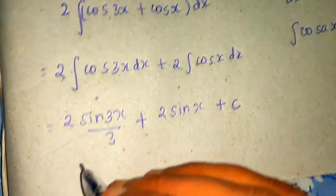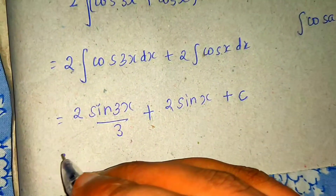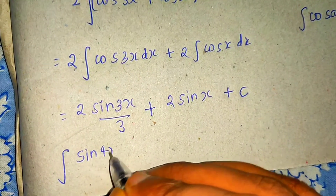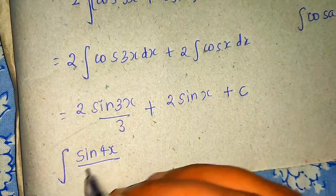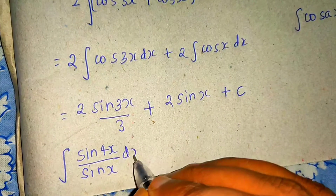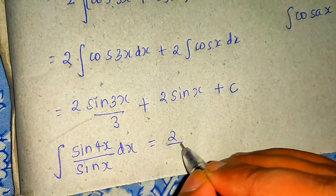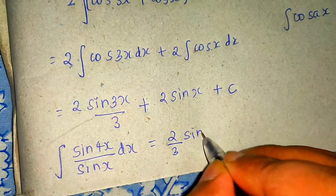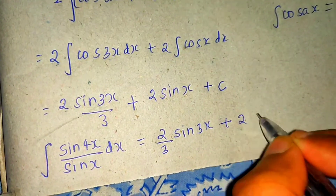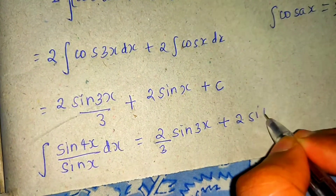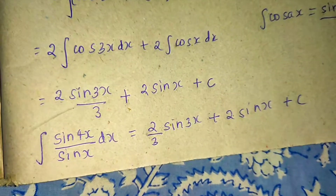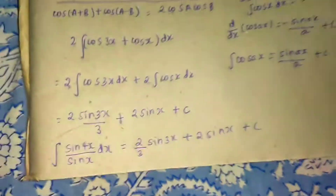So the final answer: the integral of sin(4x)/sin(x) dx equals (2/3)·sin(3x) + 2·sin(x) plus a constant. You can factor out 2 if you choose.